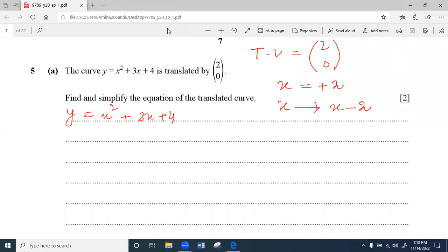Now replace x by x minus 2. Three into x minus 2 plus 4. Using second algebraic identity, x square plus 4 minus 4x plus 3x minus 6 and plus 4. So y equals x square minus x minus 2 is the new equation of the translated curve.